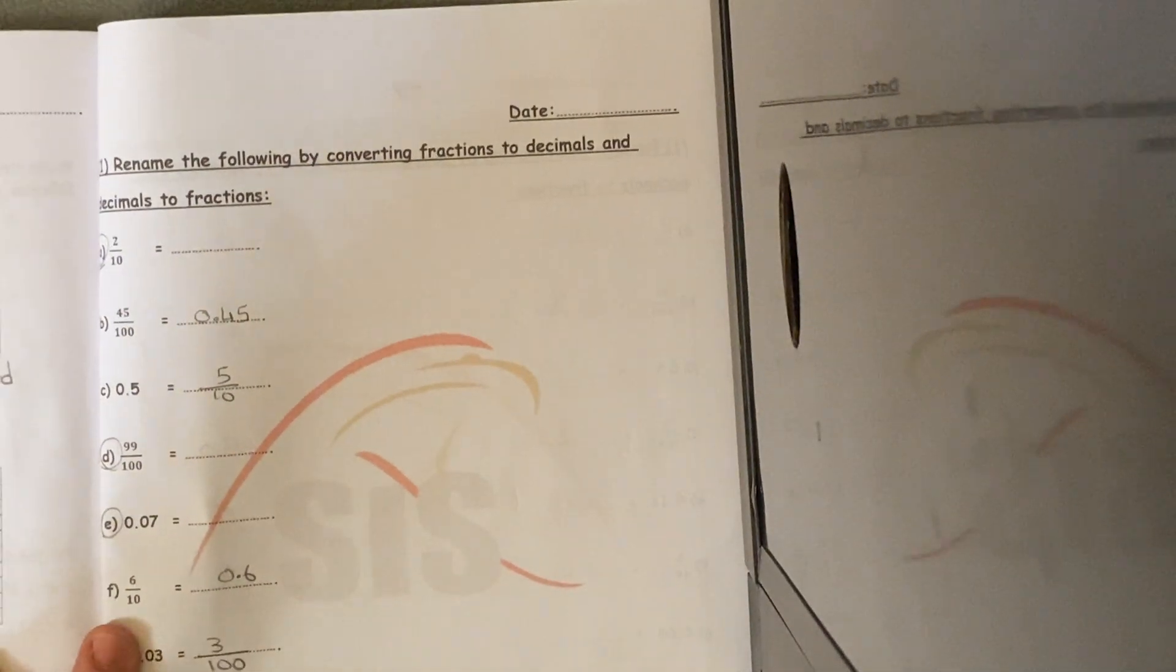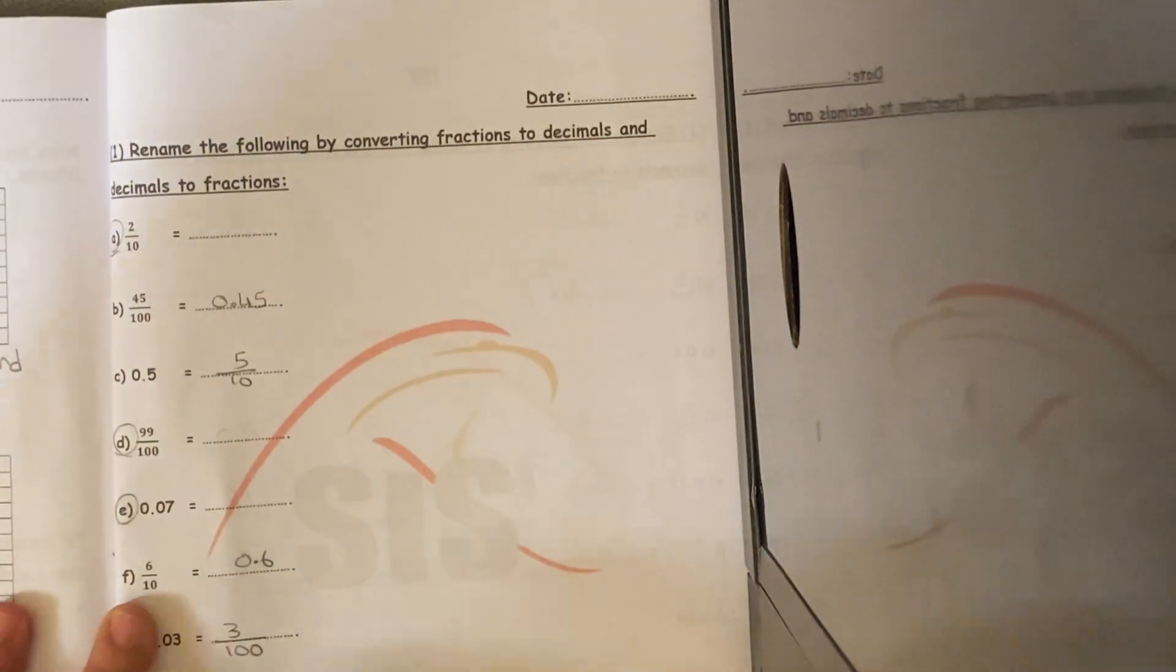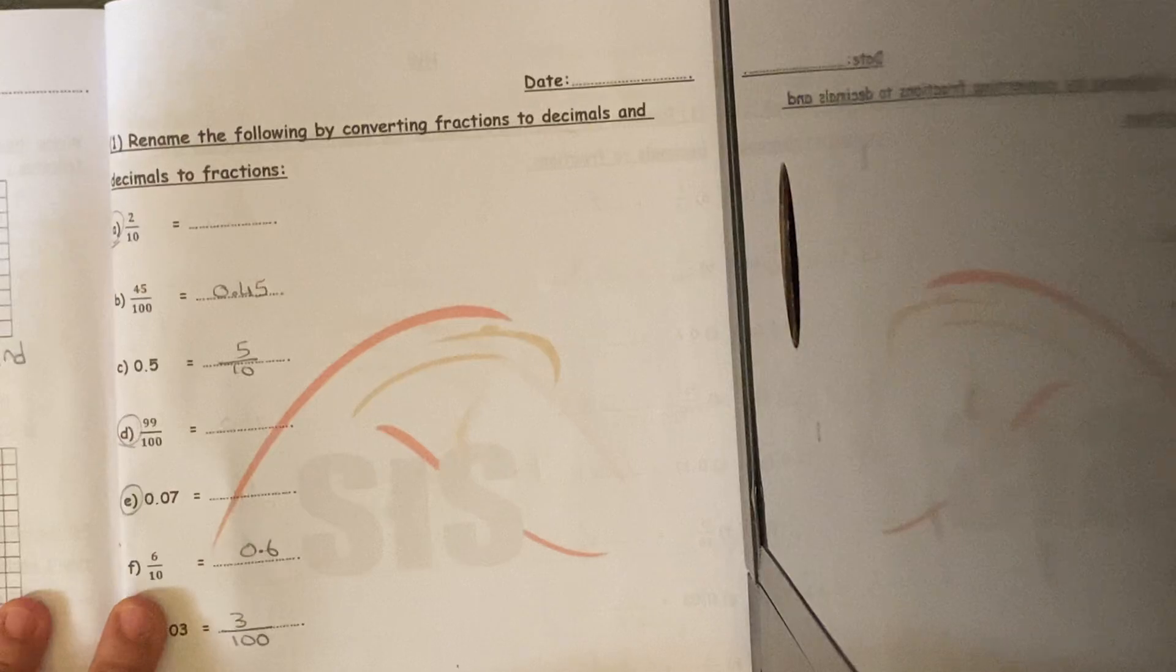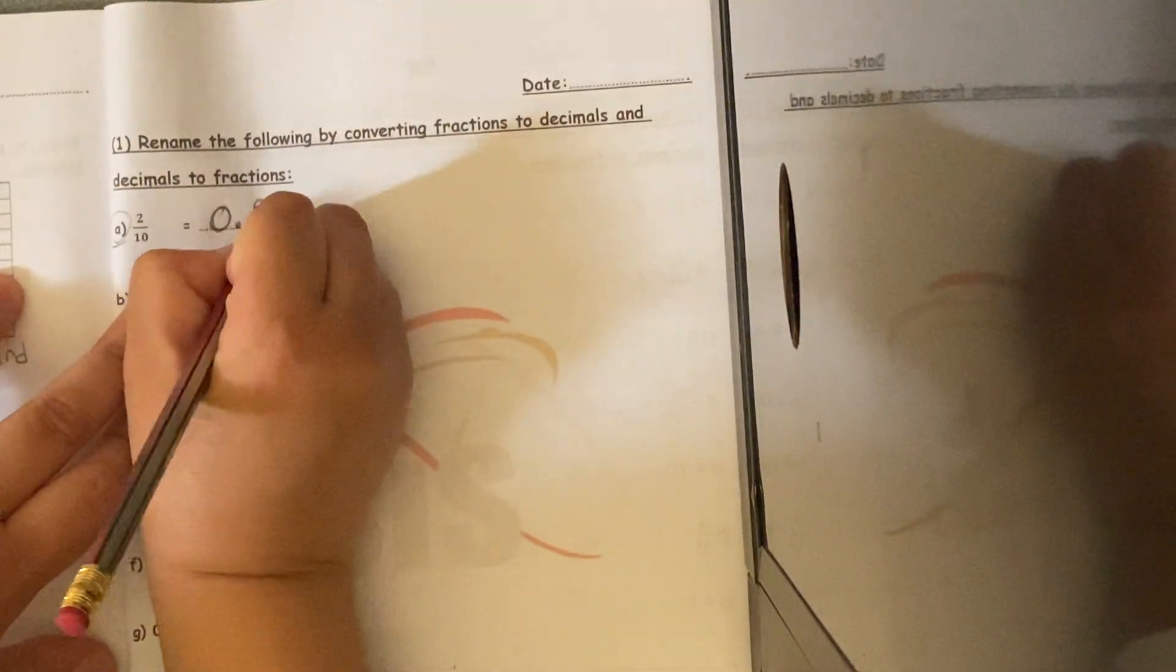Now we are on page 93. Rename the following by converting fractions to decimals and decimals to fractions. I have 2 over 10, so I have no whole number, so 0.2.